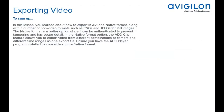To sum up, in this lesson you learned how to export in AVI and native format, along with a number of non-video formats such as PNGs and JPEGs for still images. The native format is a better option since it can be authenticated to prevent tampering and has better detail. The add clip feature allows you to export video from different combinations of cameras and different time ranges as one export file. Ensure you have the ACC Player program installed to view video in the native format.